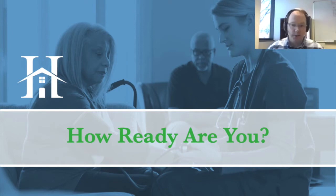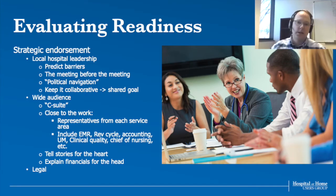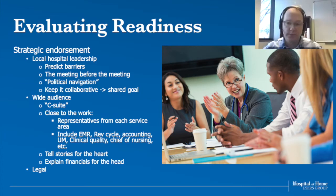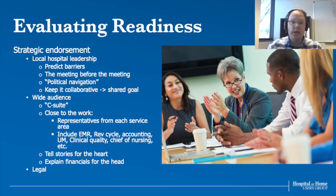I start with: how ready are you? This is very key to developing ancillary service contracts. Evaluating your readiness includes obtaining strategic endorsement. You want to look at your hospital leadership, predicting barriers, having meetings before the meetings, getting people on board before you bring it to a larger audience. There'll be a lot of political navigation, always striving to keep it collaborative with a shared goal for your patients.